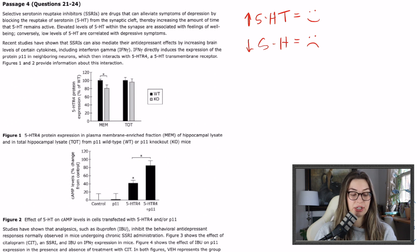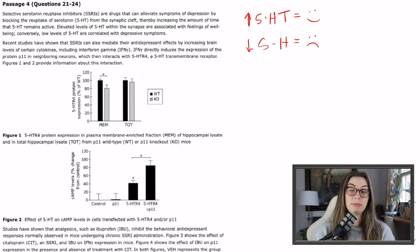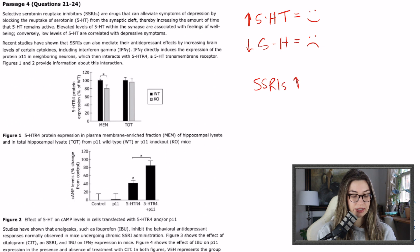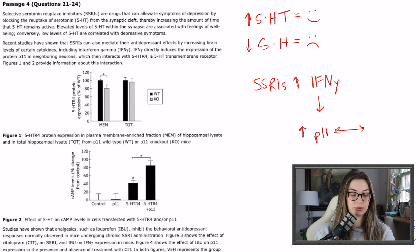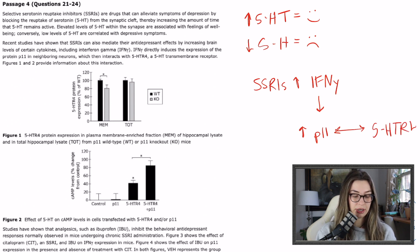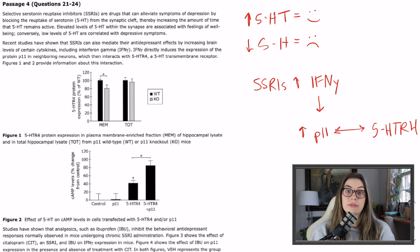Recent studies have shown that SSRIs can also mediate antidepressant effects by increasing brain levels of certain cytokines, including interferon gamma. Interferon gamma directly induces the expression of the protein p11 in neighboring neurons, which then interacts with 5-HTR4, a serotonin transmembrane receptor. I'm going to flowchart this: SSRIs increase interferon gamma → interferon gamma induces p11 → p11 interacts with 5-HTR4. We don't know the full nature of that interaction yet, so I'll leave it for now.